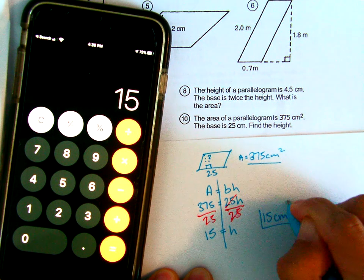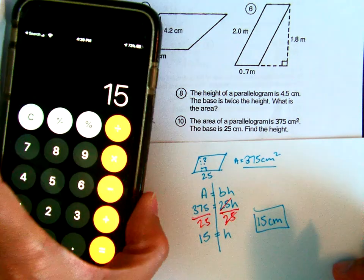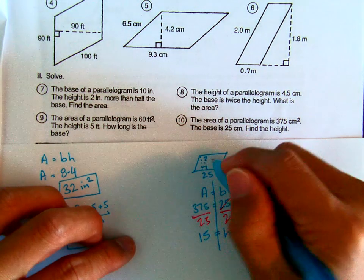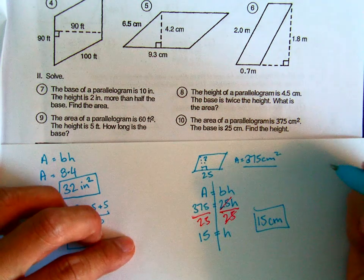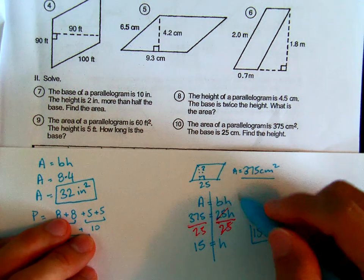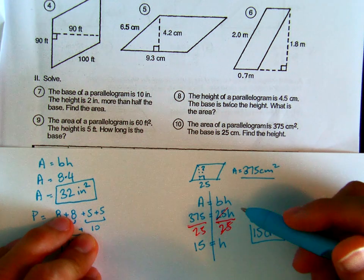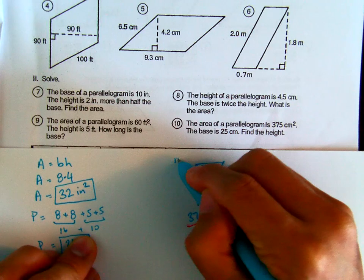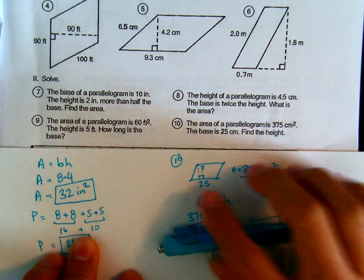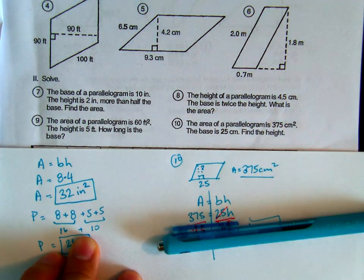Now, they're asking us to find the perimeter as well. And remember, we just found the height, which is 15. Well, actually, do they want us to find the perimeter? Oh, they do not. That's all you need to do for number 10. Again, 10 is a challenge problem. If you don't know how to do it, don't worry about it. You don't need to know how to do it. Good luck.